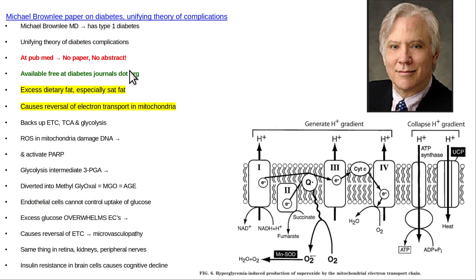I'll show you in a moment what happens at PubMed — they don't even show you the paper or the abstract. But if you go to diabetesjournals.org, you can get the paper. It's fat in general, but saturated fat in particular. I think it's because the lack of double bonds creates an additional FADH2 in the process of beta-oxidation, leading to more electrons rapidly being sent to the electron transport chain and overwhelming it.